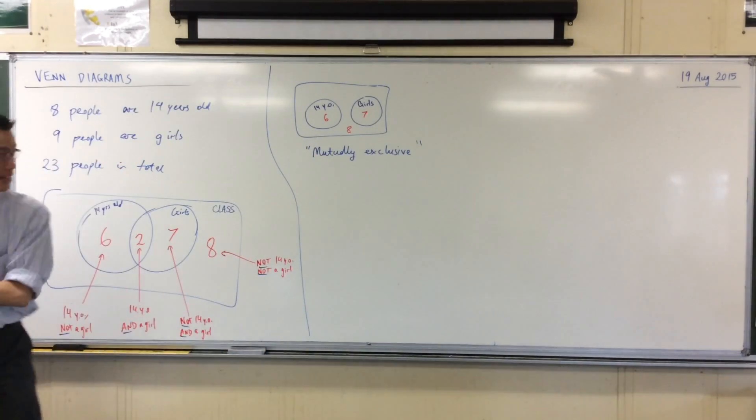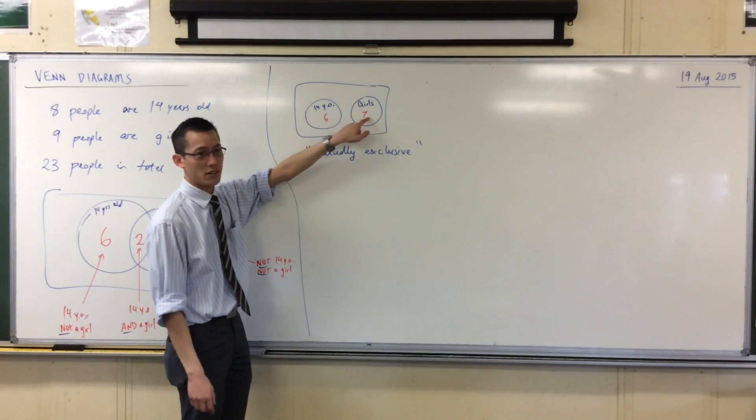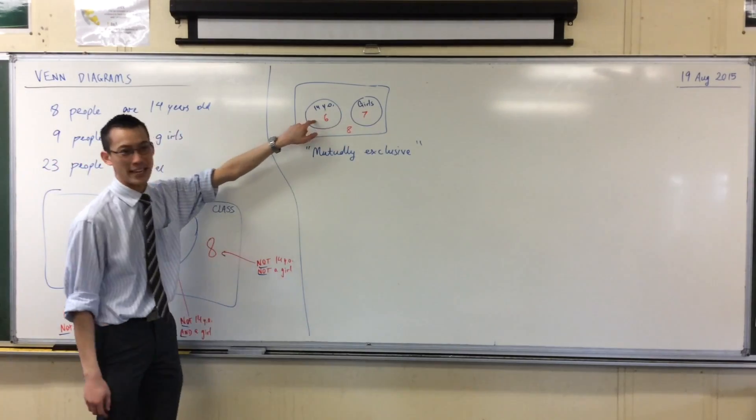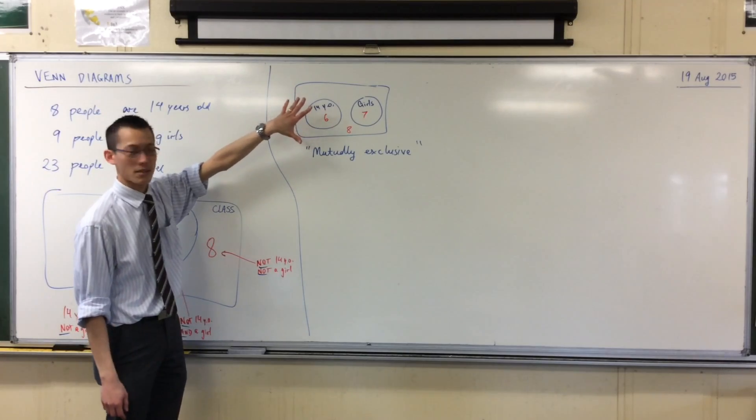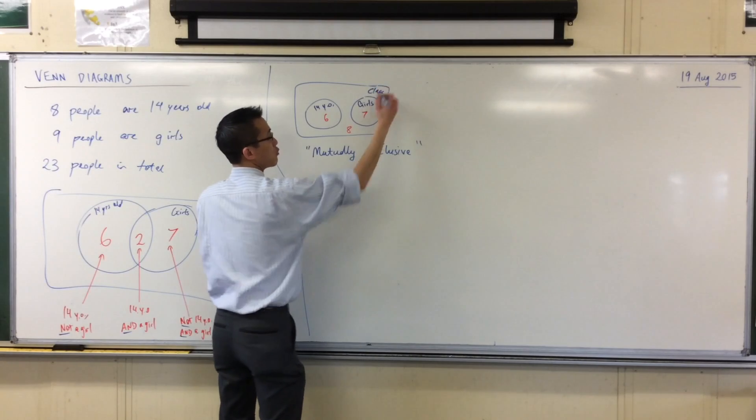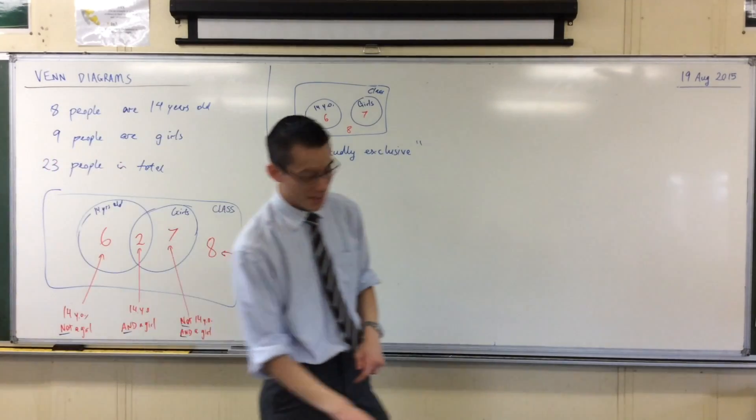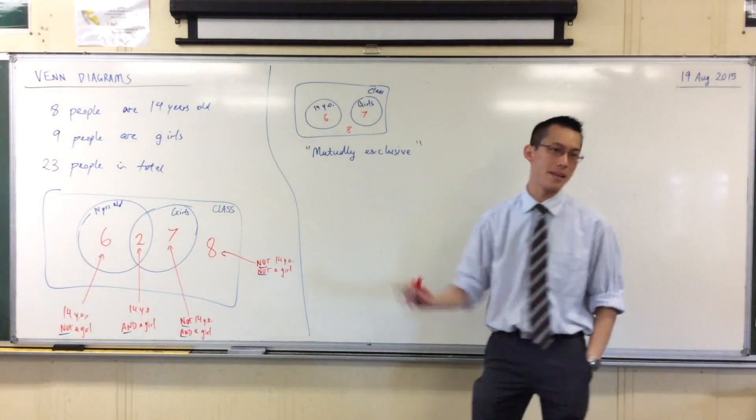Mutually exclusive. Exclude means like you don't take it away. Mutually means if you're 14 years old you can't be a girl, and if you're a girl you can't be 14, at least in this particular class. I forgot to say class. So these two groups of people mutually exclude each other. You can't be both at the same time.